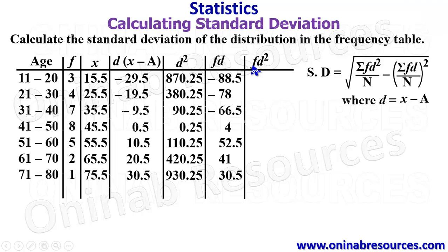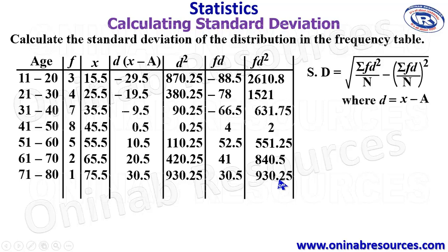And the last column for this is fd squared. You see our fd here. So f, which is the frequency, multiplied by d squared. For the first row, we have 3 times 870.25 giving us 2,610.8. 4 times 380.25 gives 1,521. 7 times 90.25 gives 631.75. Then 8 times 0.25 gives 2, 5 times 110.25 gives 551.25. 2 times 420.25 gives 840.5. Finally, 1 times 930.25 gives 930.25.